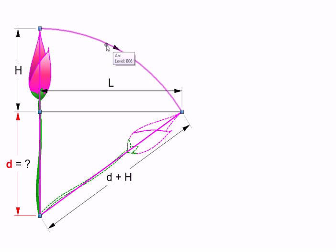This arc, the path of the tip, is going to have this point as its center. And therefore, it all boils down to finding the center of this circular arc.